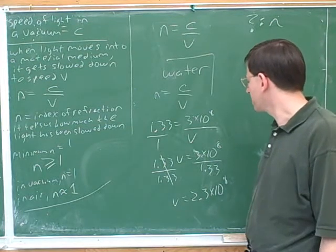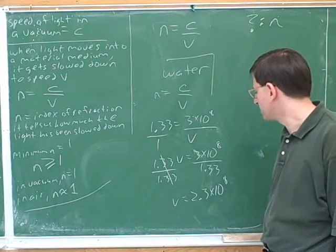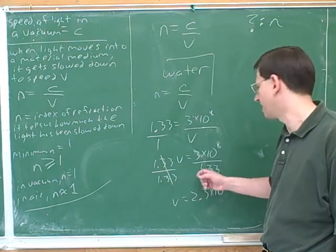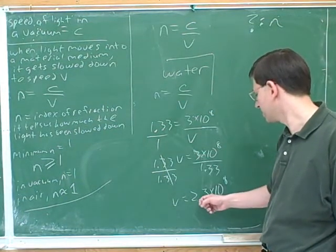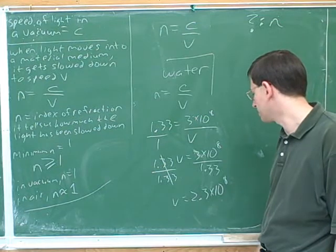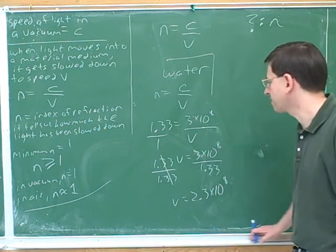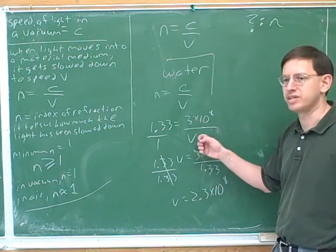We know that when things are supposed to slow down when they move into a different medium. Well, here we've slowed down a lot. We've gone from 3 times 10 to the eighth to 2.3 times 10 to the eighth. The water has slowed us down. So it's important to have clear in your notes the algebra that we did here.